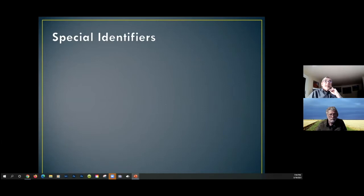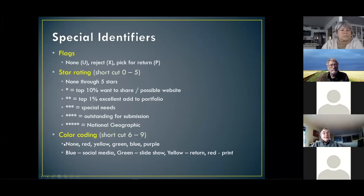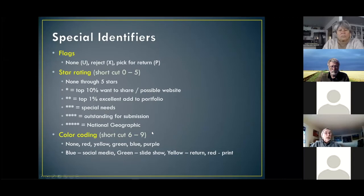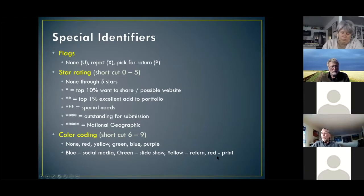Lightroom uses special identifiers including flags. You can set keyboard shortcuts and use color coding — everyone has to come up with a system they like. For example: blue flag for social media posts, green flag for presentation slideshows, yellow flag for a unique project to come back to, and red flag for something printed for yourself or a client. The most important thing about color coding is to be consistent in whatever system you choose.